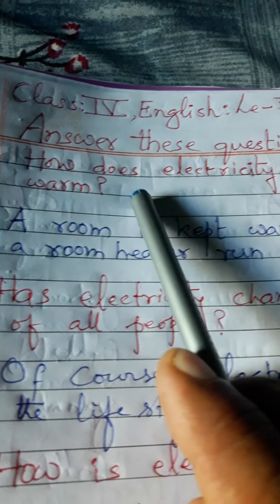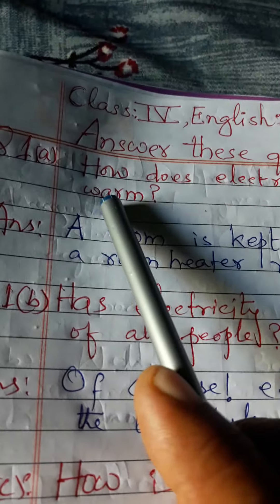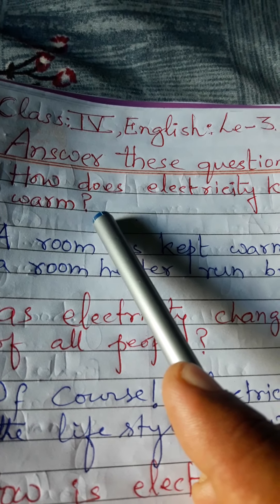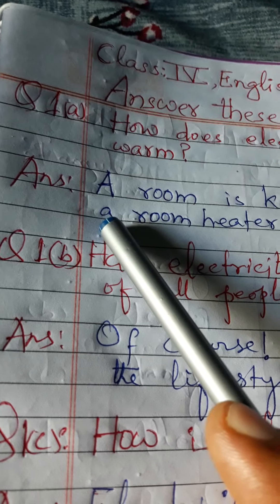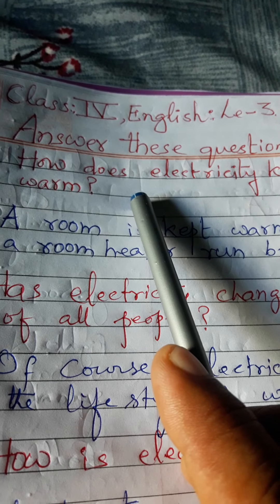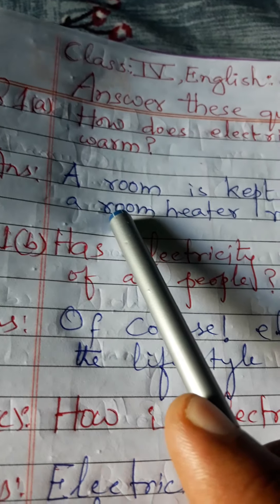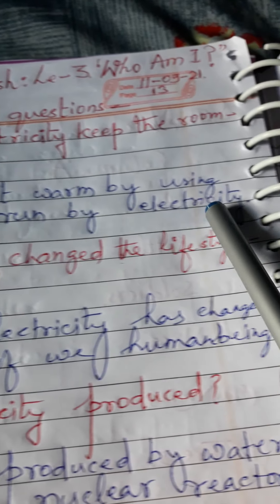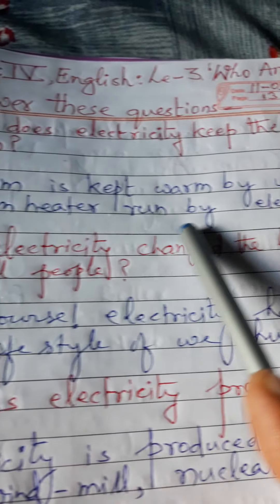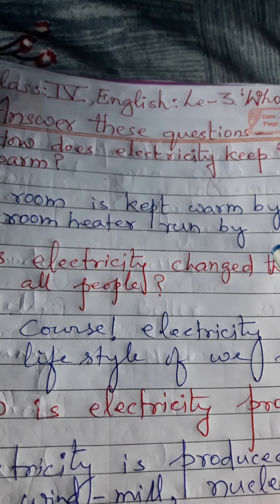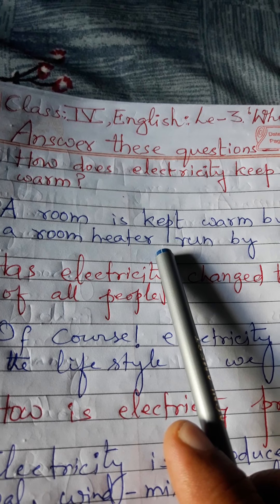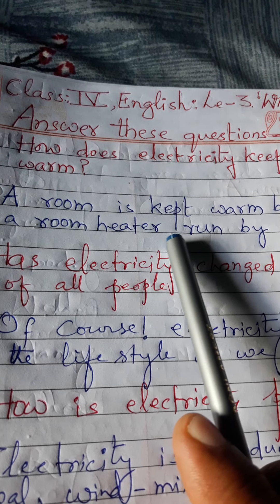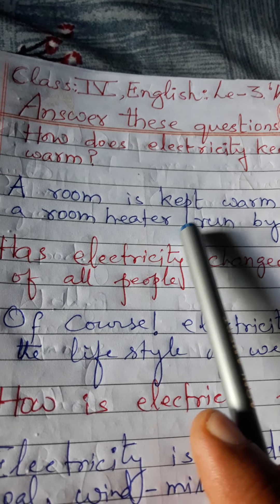Answer these questions. Question 1a: How does electricity keep the room warm? Kis tarah se bijli ghar ko garm rakhti hai? Answer: A room is kept warm by using a room heater run by electricity. Ghar ko garm rakha jata hai bijli ke dwara ghar mein room heater prayog mein lakar.